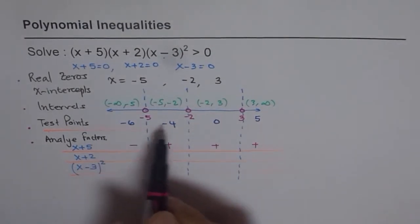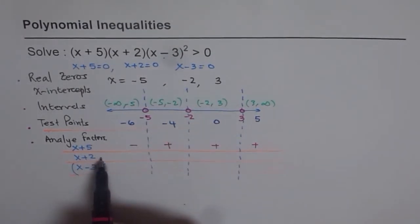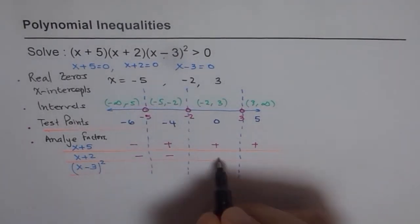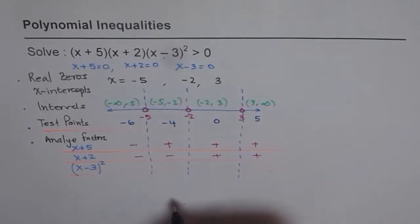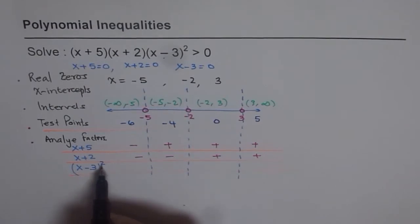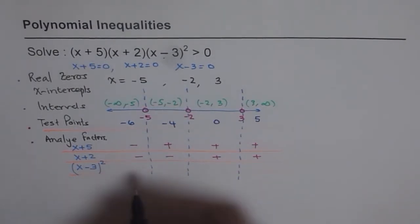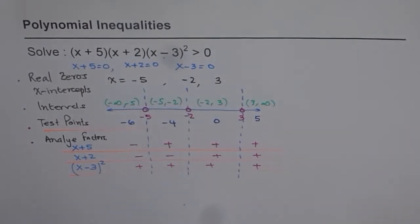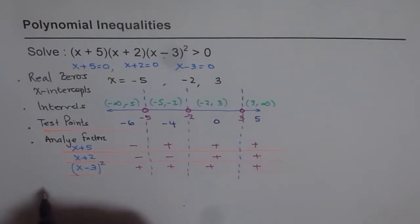Similarly, I'll test these test points for the other factors. The other factor is x plus 2. Minus 6 for x gives me negative, minus 4 for x gives me negative, 0 gives me positive, and this is also positive. Remember, this is squared. So whether we have minus or plus, it will always result into a positive value. So that is our sign for each factor.